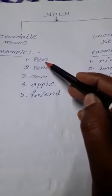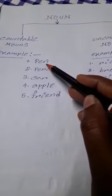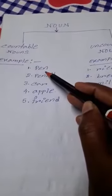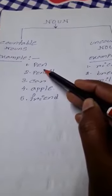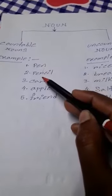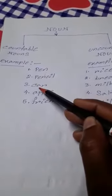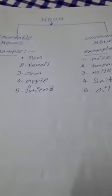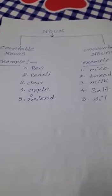See the example — pen. Can you count pens? How many pens are there? Yes. So pen is a countable noun. Like pencil, car, apple, friend — these are all things we are able to count. Whatever things we are able to count are called countable nouns.